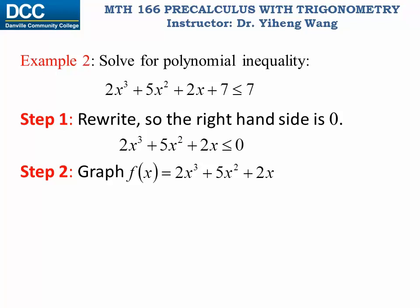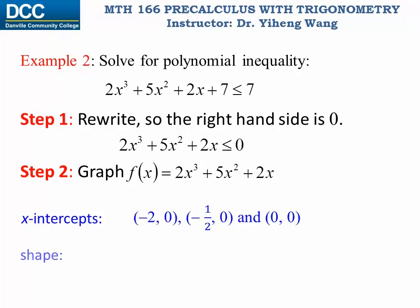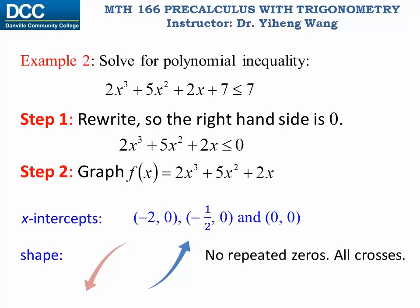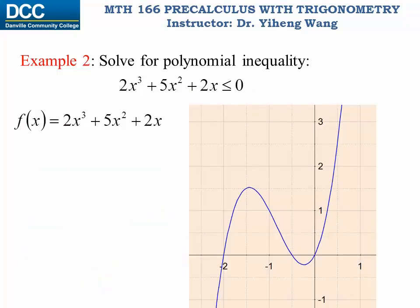Now we graph the function 2x cubed plus 5x squared plus 2x. We only need the x-intercepts — which are (-2, 0), (-1/2, 0), and (0, 0) — and the shape. Using the leading coefficient test: the leading coefficient is positive so the right tail goes up, the degree is 3 which is odd so the left tail goes to the opposite side, and there are no repeated zeros so the graph crosses the x-axis every time. Based on this, here is a sketch of the function.